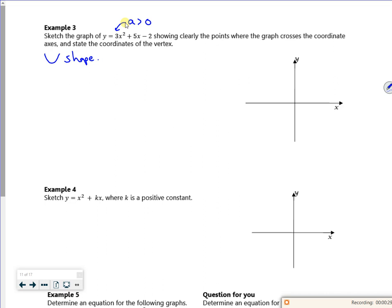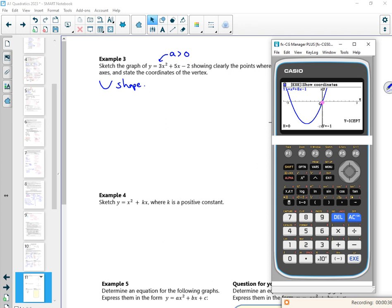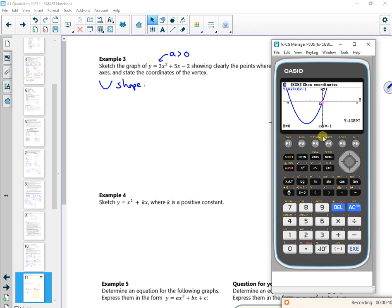Now then, let's have a little graph of it on the calculator and see what we can get away with doing. So let's have 3x² + 5x minus 2.